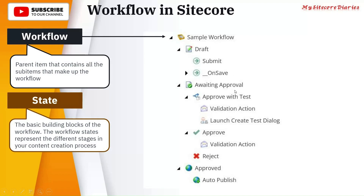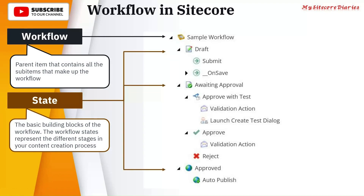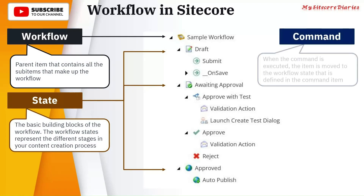The first is the Draft state, where the content is in draft mode. The second is Awaiting Approval — once the draft is completed, it goes for review. Once moved from Awaiting Approval, it goes to the Approved state. So Draft, Awaiting Approval, and Approved are the three states in Sitecore.